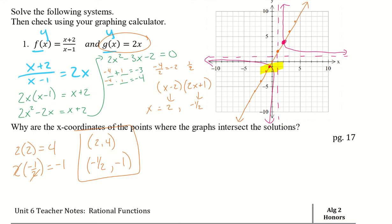Why are the x-coordinates of the intersection points the solutions? Because if the functions equal one another, that's where the x's are equal and the y's are equal — that's why the x-coordinates are where the graphs intersect.